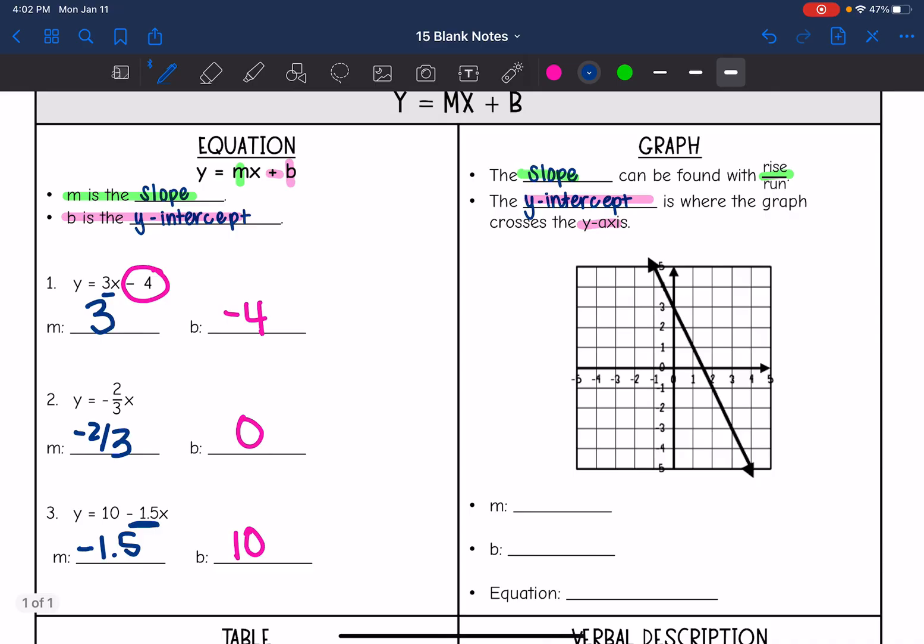We're going to find the slope and the y intercept. So right away, I noticed that the slope is negative. I'm going to put a negative sign so I don't forget that. And there's two perfect points. I'm going to draw my slope triangle. The rise is 2 and the run is 1. So the slope is negative 2 over 1, which simplifies to negative 2.